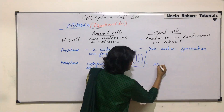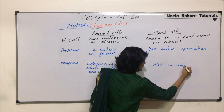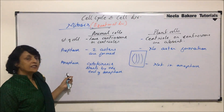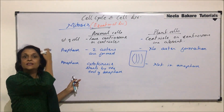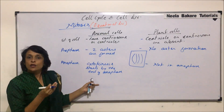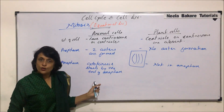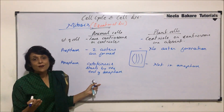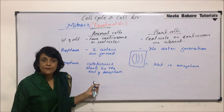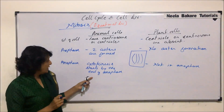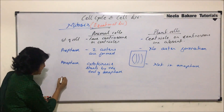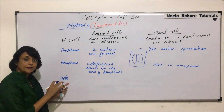In plant cells, cytokinesis starts by the end of telophase because the process of cytokinesis is entirely different — so it does not begin in anaphase. In telophase, everything reverses: the nuclear membrane reappears and chromosomes decondense to form chromatin again — these events are the same in both cells. The major differences then arise in cytokinesis.